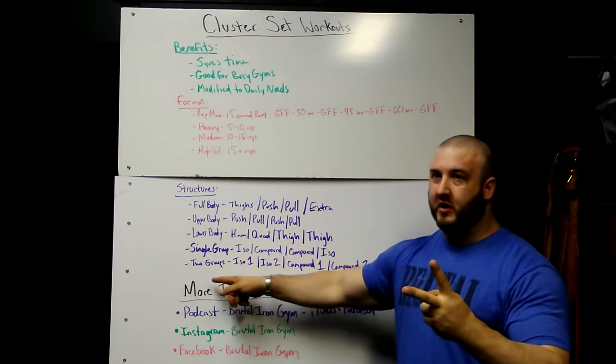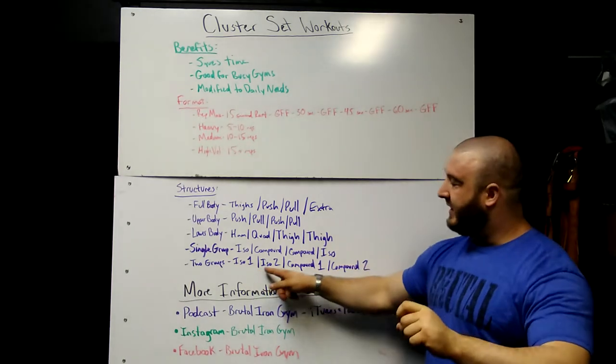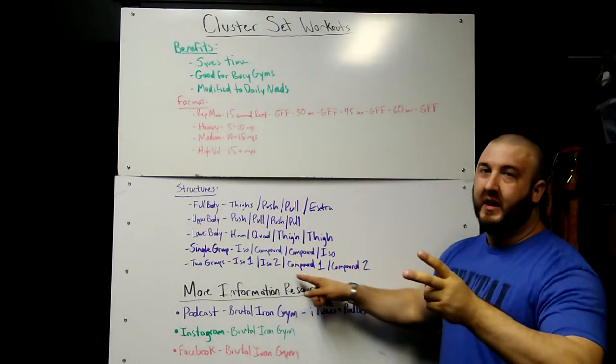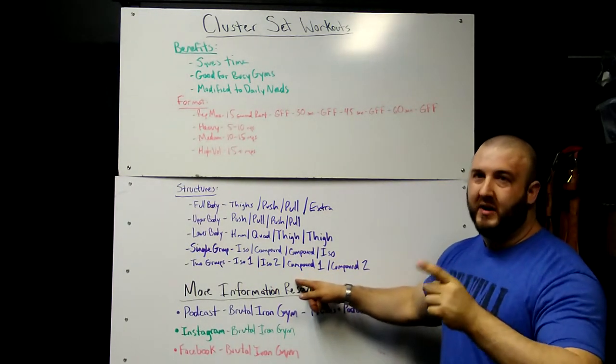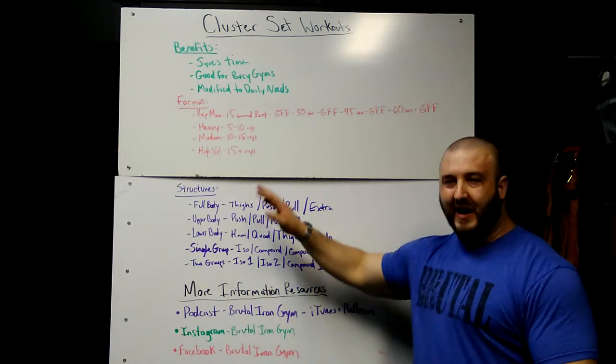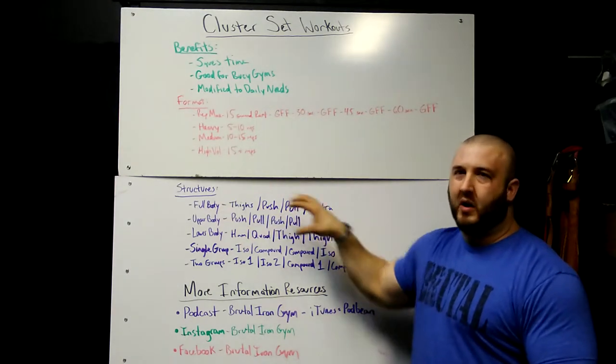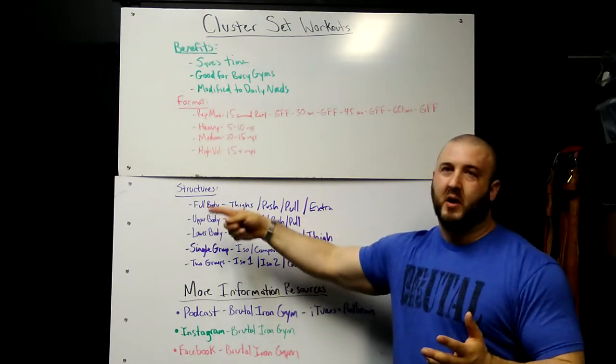Now if you have two muscle groups, you're going to set them back to back. I'm going to do an isolation of the first muscle group, an isolation of the second muscle group, then a compound motion for the first group, then a compound motion for the second group. So those are some sample formats that you can use to put together these cluster sets to create a full workout, depending on what body parts or what your focus is for that day.